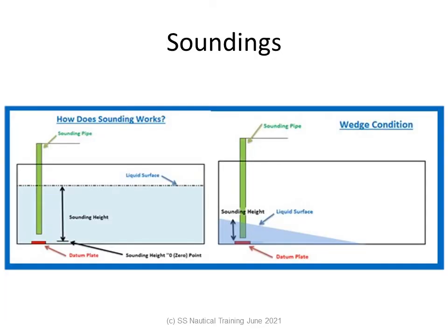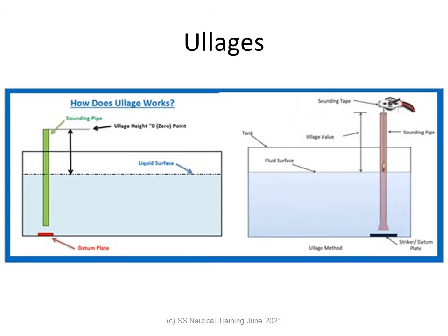Readings from the liquid level gauge can be read as a ullage, which is the height of the reference point above the surface of the liquid being measured, or a sounding, which is the depth of the liquid to the bottom of the tank being measured. In nautical terms, the word sound is used to describe the process of determining the depth of liquid in a tank or under a ship. Sounding is the measured height of the fluid from the surface of the fluid to the bottom of the tank. The amount by which a container falls short of being full — the air space between the oil surface and the top of the tank — is known as ullage.